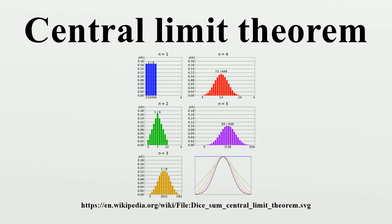The central limit theorem has a number of variants. In its common form, the random variables must be identically distributed. In variants, convergence of the mean to the normal distribution also occurs for non-identical distributions or for non-independent observations, given that they comply with certain conditions.